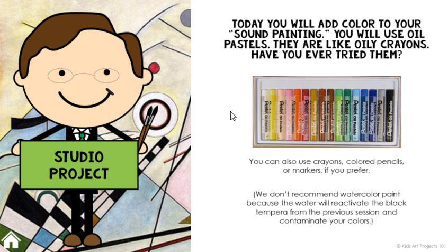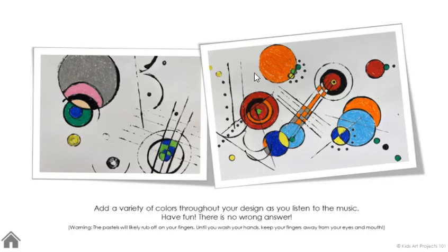Encourage them to interpret it in their own way. Then present the idea of adding color to their designs from session two. I recommend oil pastels — the colors are super vibrant and it feels like a novelty compared to crayons and markers. Oil pastels can be a little expensive, so if you're on a budget, use what you have. I would recommend avoiding watercolor paint, because water will reactivate the black tempera paint and you'll get contaminated colors. Unless you used acrylic paint in session two, avoid adding water-based paint on top to add color in session three.